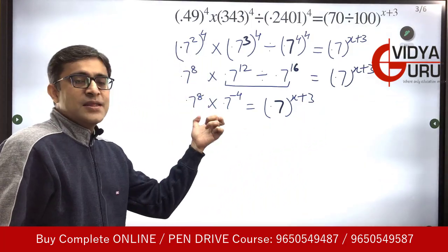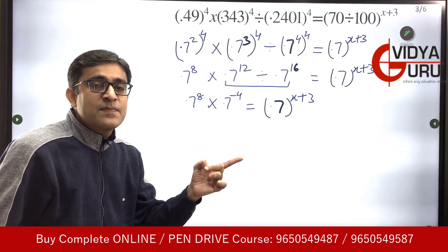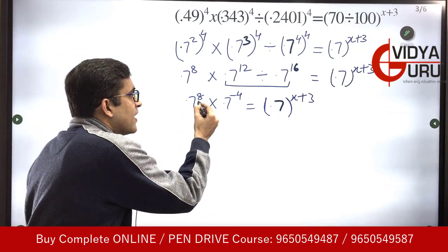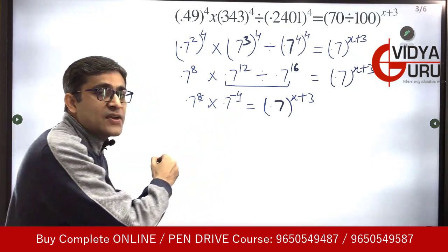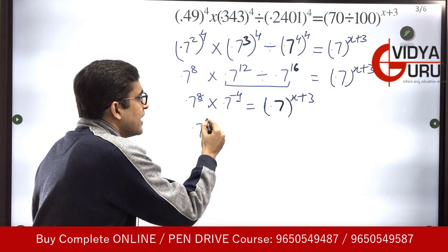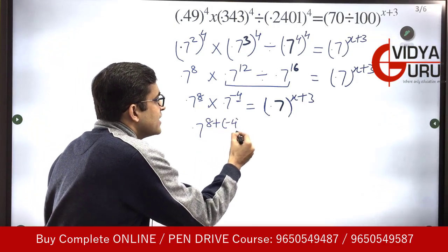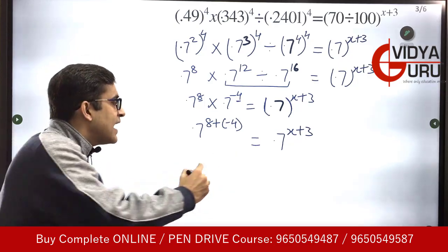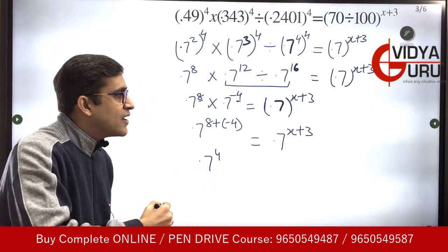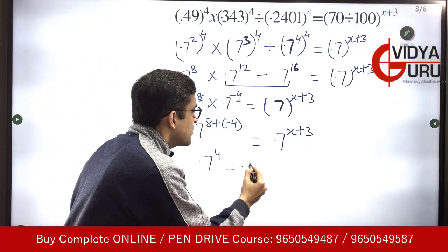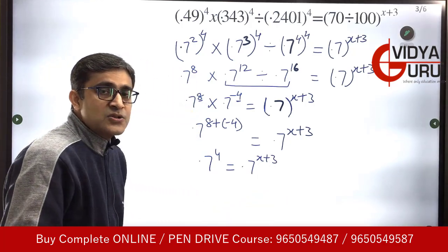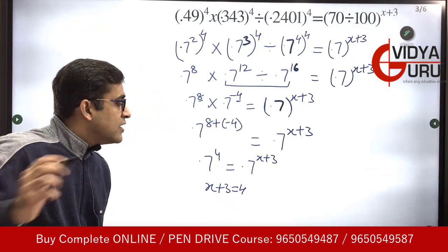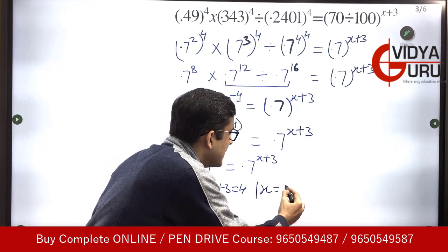Now the terms are getting multiplied and the bases are the same, so the powers will get added. One power is positive and the other is negative. 8 and minus 4, when added, leave us with 4. So 0.7 raised to power 4 equals 0.7 raised to power x plus 3. Therefore x plus 3 equals 4, and the value of x is equal to 1.